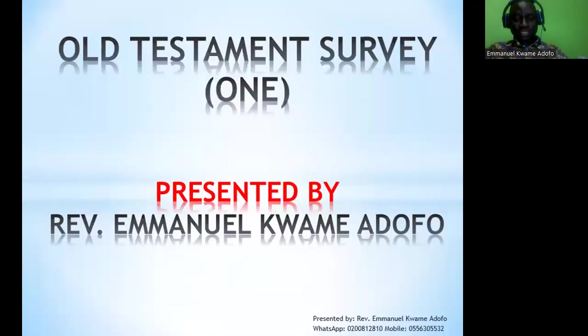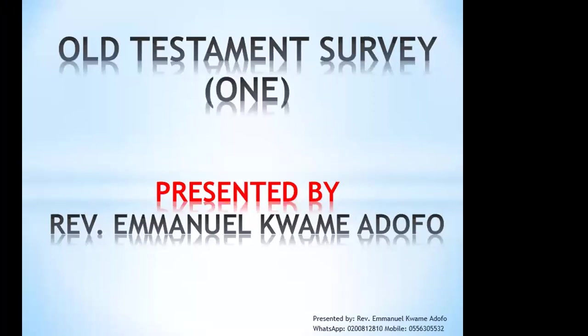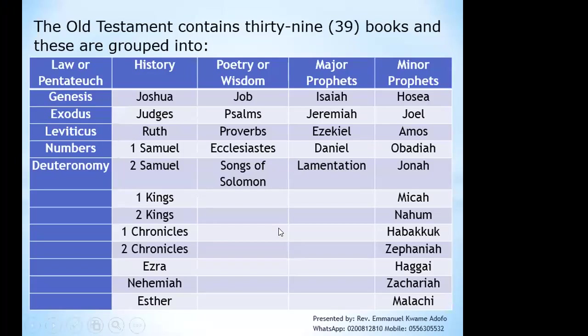So we go straight forward to the Old Testament, looking at having a quick survey of all the things in there. It is my prayer that the good Lord will himself see us through. So we go to the Old Testament. As you already know, the Old Testament itself starts from Genesis, and we are already aware that the Old Testament has 39 books.